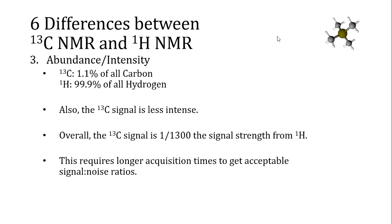Usually we get around this issue by using longer acquisition times. If we continue to take the same spectrum over and over and add them all up, the signals generated by the carbon atoms continue to get bigger and bigger, but signals generated by random fluctuations or noise get smaller and smaller and cancel out because they're random. A dedicated organic chemist with a tiny amount of a very precious compound might spend four or eight hours collecting a reasonable quality carbon-13 NMR spectrum.